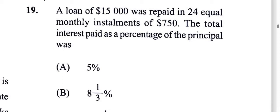A loan of $15,000 was repaid in 24 equal monthly installments of $750, $750 per month for 24 months. Alright, so let's see how much that will be so we can find out what the interest was. Then we can calculate the interest as a percentage of the principal.